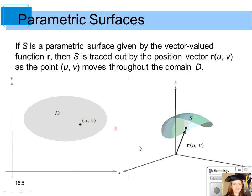If s is a parametric surface given by the vector-valued function r, then s is traced out by its position vector r(u,v) as the point (u,v) moves throughout the domain d — represented here by a shaded gray circle. Notice this should be a u and a v axis: the horizontal axis is your u axis and the vertical axis is your v axis.